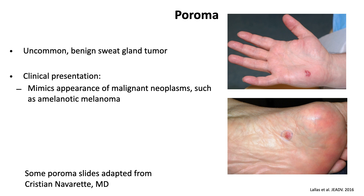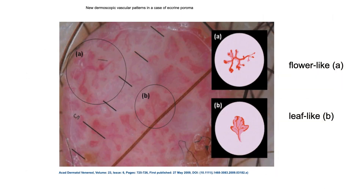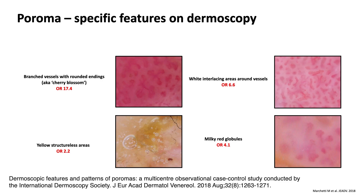The poroma is a much less common finding — it's a benign sweat gland tumor. The clinical presentation can mimic other malignant neoplasms, such as an amelanotic melanoma, so if you see this you're not going to leave it regardless of what your dermoscopy shows. A well-done IDS study shows that many of the patterns we can see look like flowers or leaves — those flower-like or leaf-like patterns in eccrine poromas.